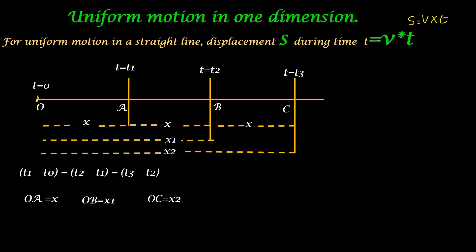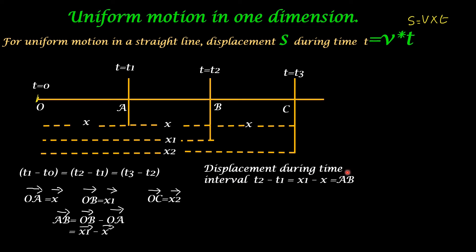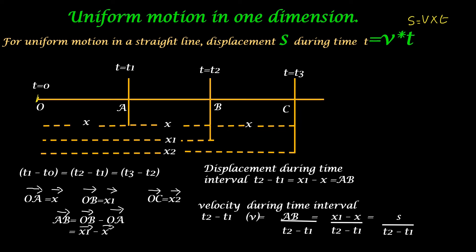From the diagram, OA equals x, OB equals x1, and OC equals x2. Displacement is a vector, so we put a vector sign on all these terms. Now consider distance AB: AB equals OB minus OA, which equals x1 minus x. The displacement during time interval t2 minus t1 is x1 minus x, which equals AB.